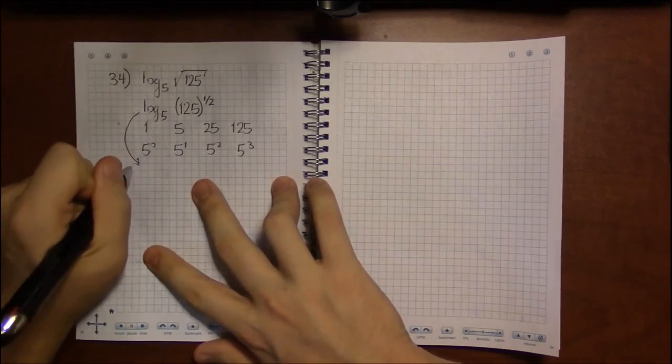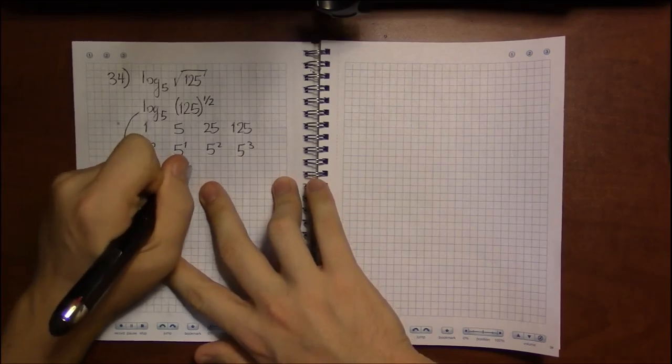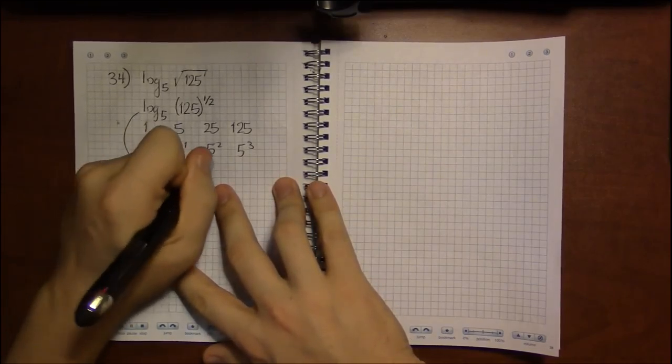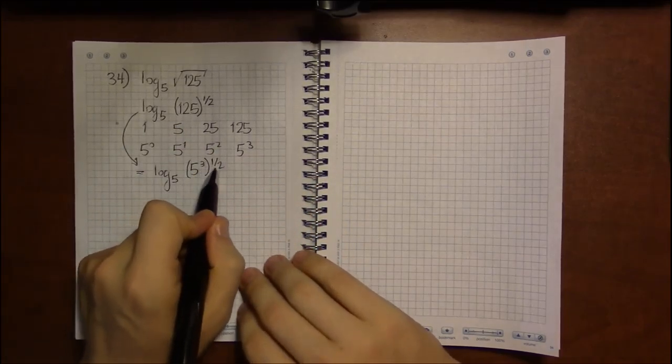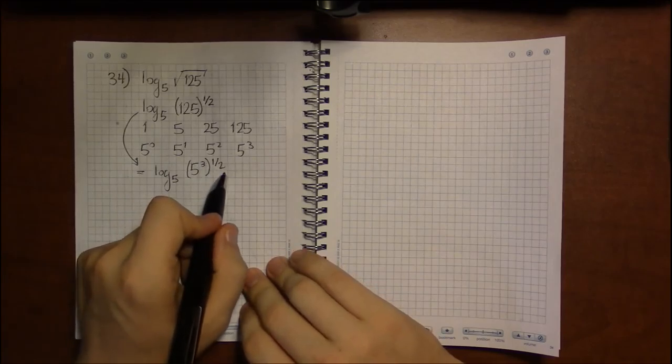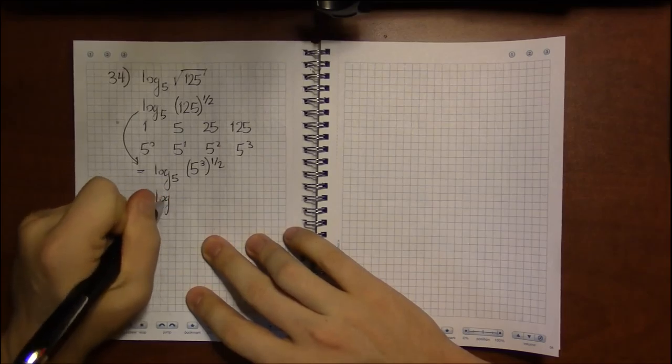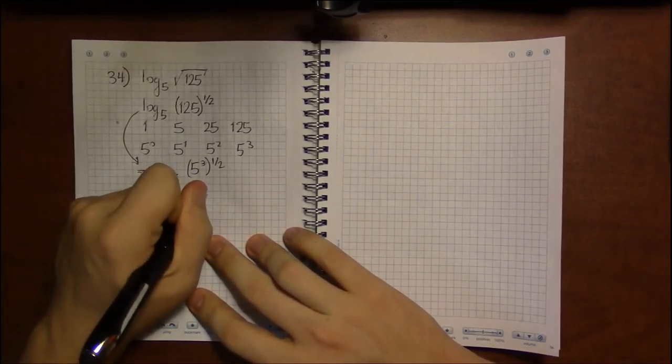So this is equal to log base 5 of 5 cubed to the 1 half. And if I use properties of exponents, I can combine these two with multiplication. I can write this as log base 5 of 5 to the 3 halves.